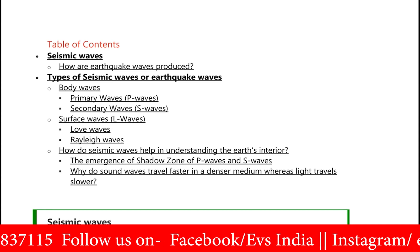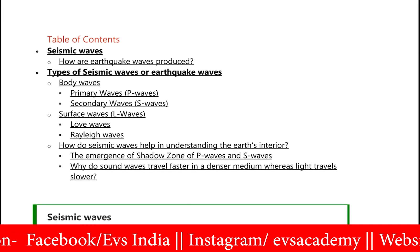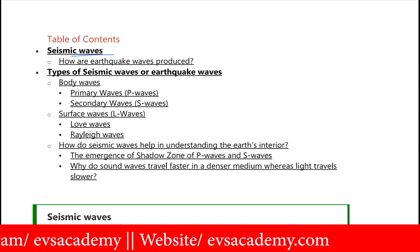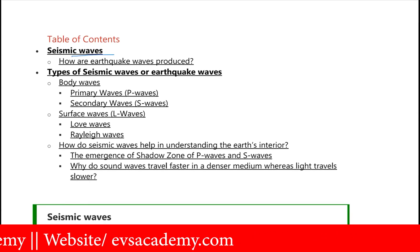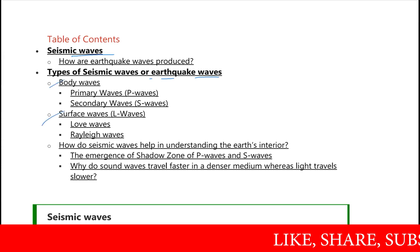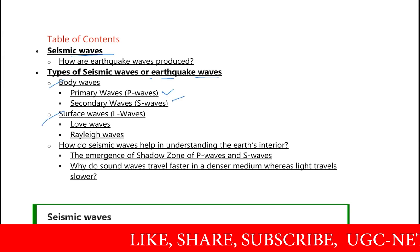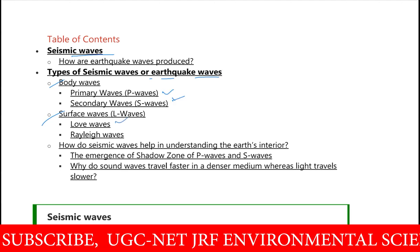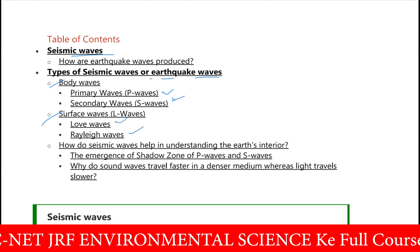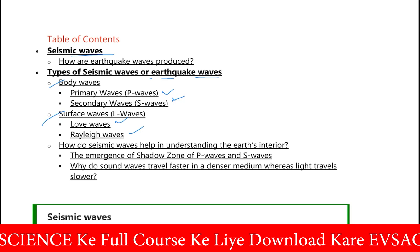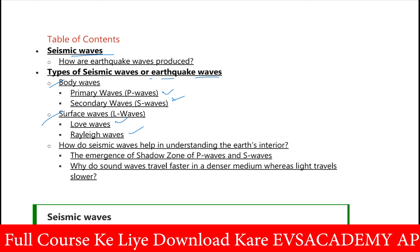The table of contents we have to cover here: we have to discuss about the seismic waves, which are also called earthquake waves. How earthquake waves are generated. Types of seismic waves — two main types: body waves and surface waves. Body waves are of two types: P waves and S waves, primary and secondary waves. Surface waves are L waves — a type of Love waves — and Rayleigh waves. We will also discuss how seismic waves help us understand the internal structure of the earth.